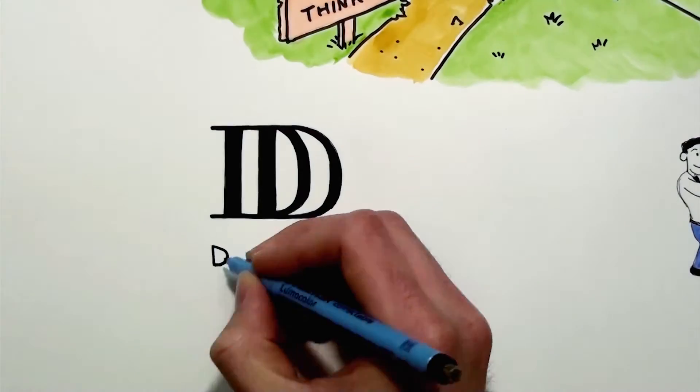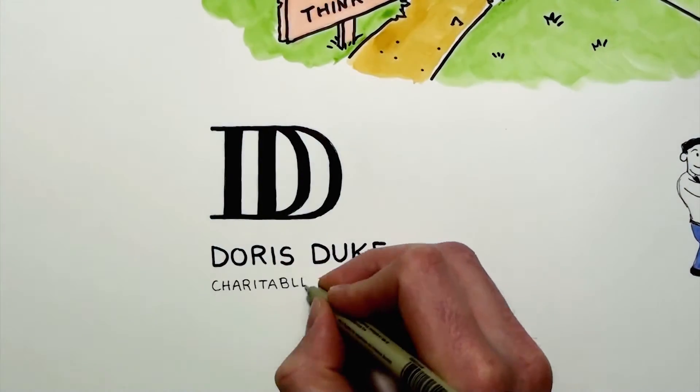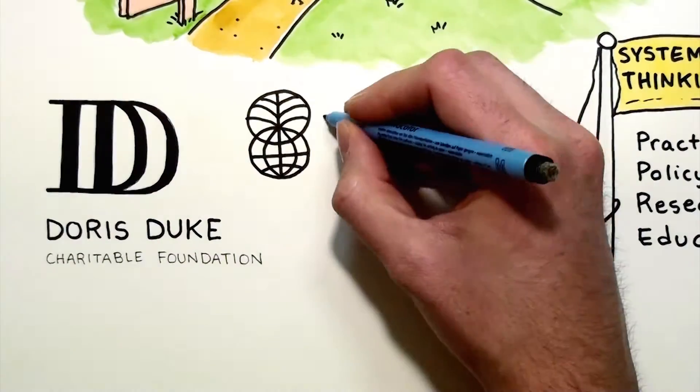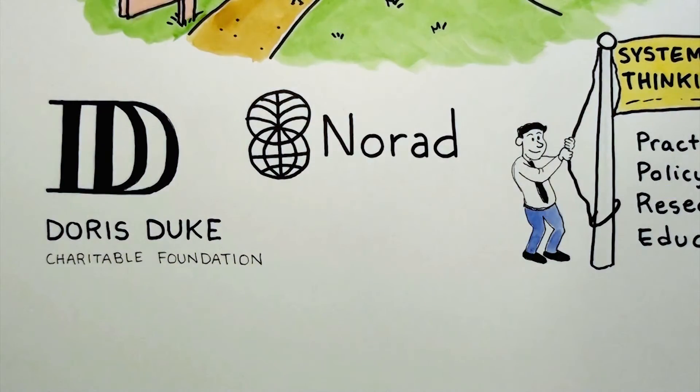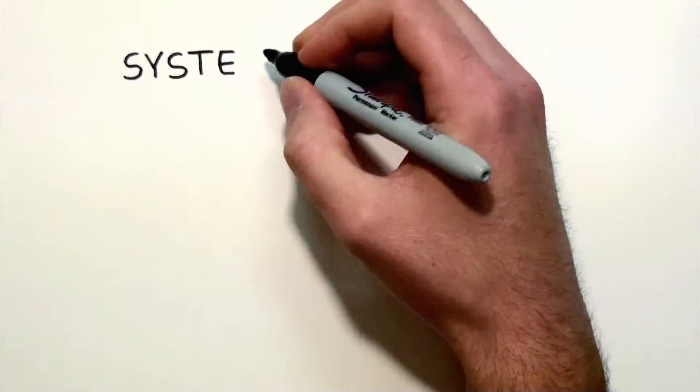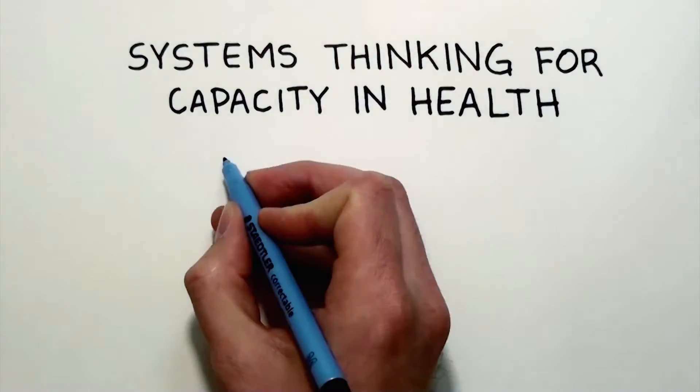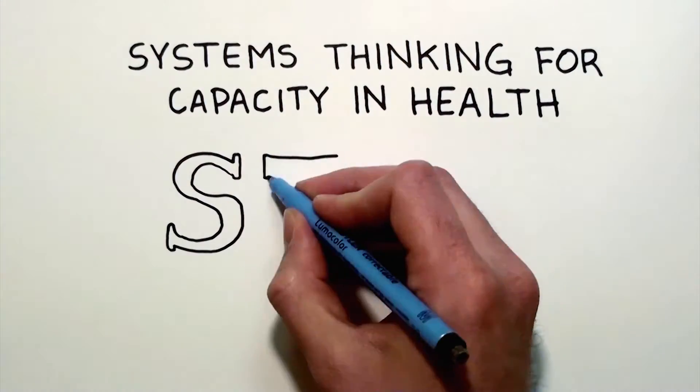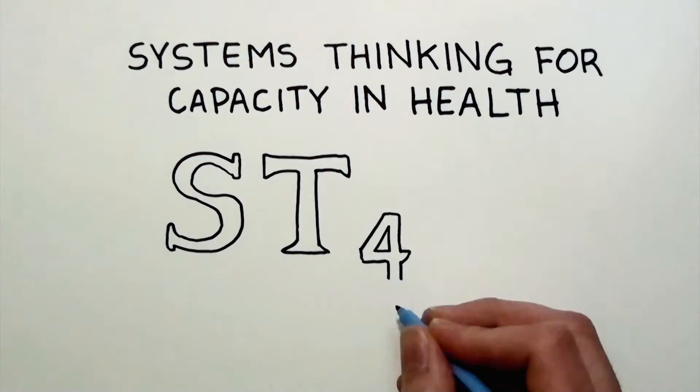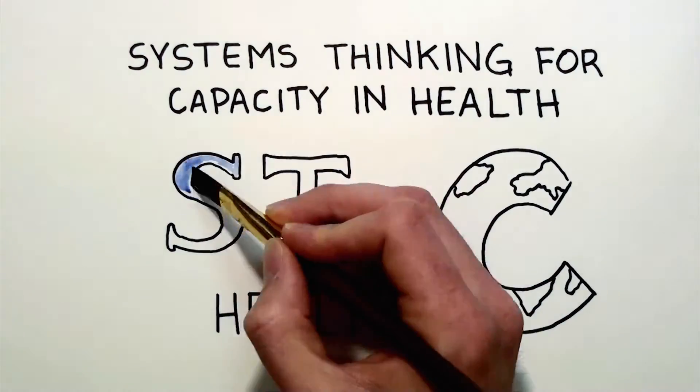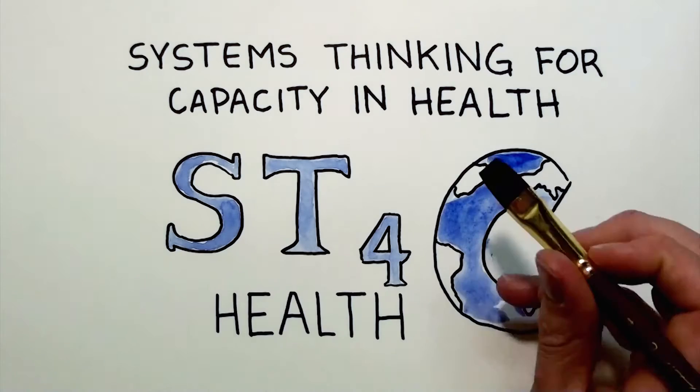Thanks to support from the Doris Duke Charitable Foundation's African Health Initiative and the Norwegian Agency for Development Cooperation, we have formed an organization called Systems Thinking for Capacity in Health to advocate for these changes, and we hope you'll join us. For the sake of the lady in the corner, Jamket community members, and millions like them, thank you.